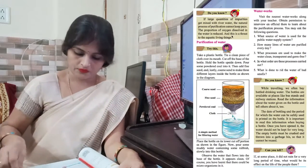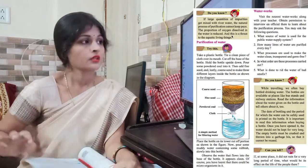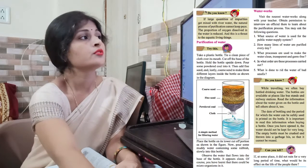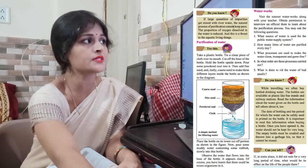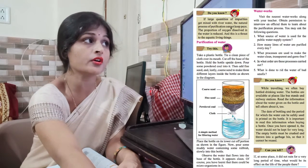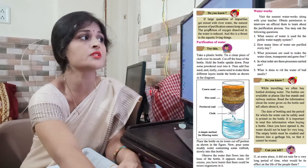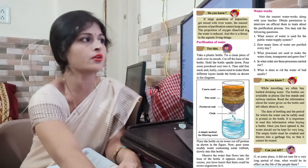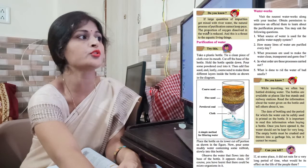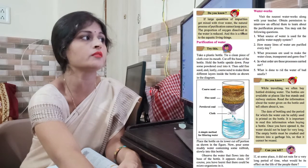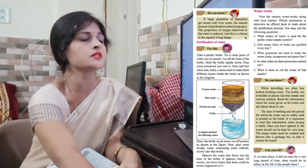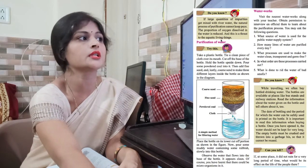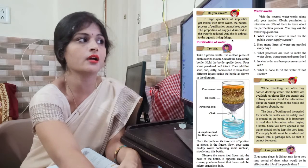Do you know? If large quantities of impurities get mixed with river water, the natural process of purification cannot keep pace. The proportion of oxygen dissolved in the water is reduced, and this is a threat to aquatic living things.